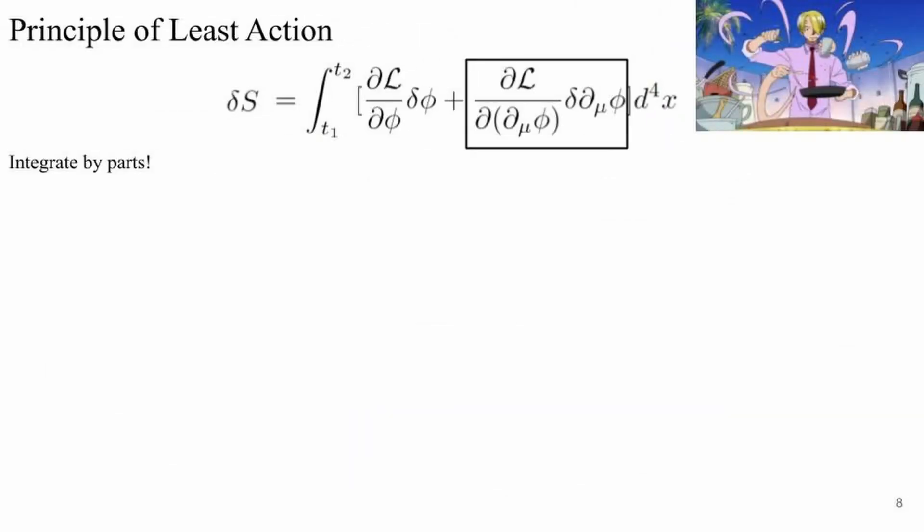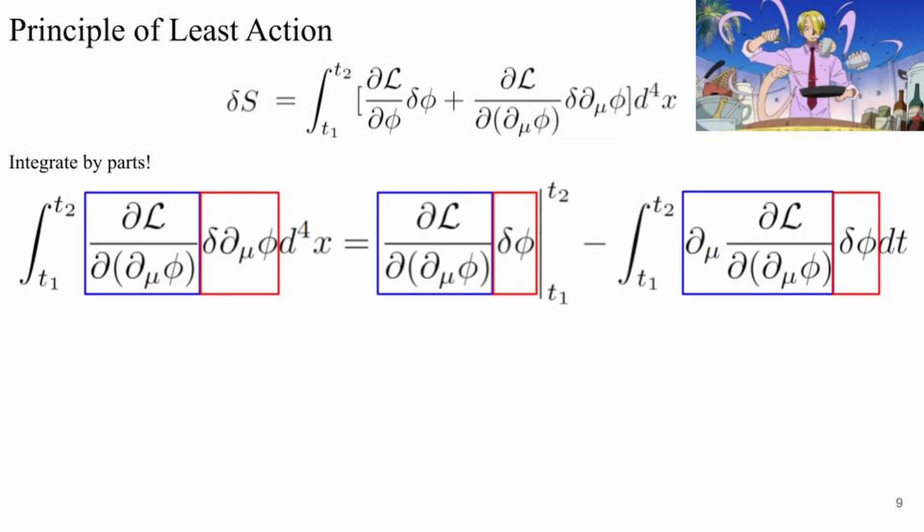Now we can really start cooking. We take the second term in our equation for the functional derivative and notice that it can be integrated by parts. After performing the integration by parts, which I tried to visualize using these blue and red boxes, we are left with these two terms.